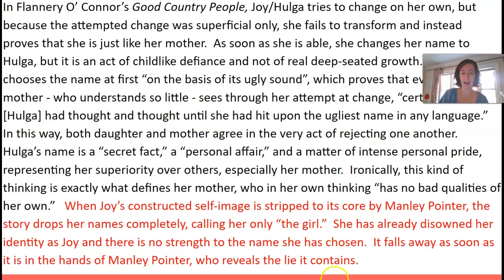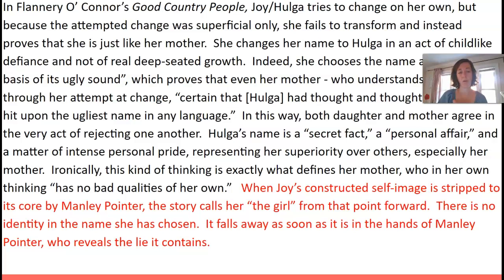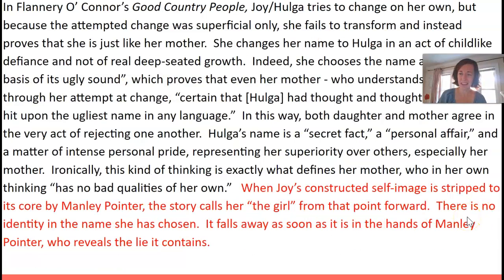And instead of these sentences, I am going to say: 'When Joy's constructed self-image is stripped to its core by Manly Pointer, the story calls for the girl from that point forward.' So that's just a plot sentence, and that's okay. I can now insert a simple sentence to make meaning of that in a tighter way: 'There is no identity in the name she has chosen.' That's different from what I had written — she has already disowned her identity as Joy and there's no strength to the name she has chosen. I like this better. It's saying the same thing, but it's got more power, more drama, and it doesn't ask as much of my reader because I don't want to annoy my reader with all these convoluted phrases.